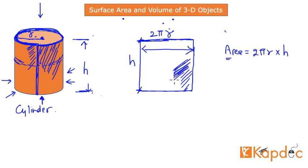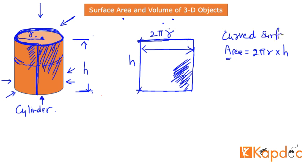What exactly do you call this surface area with reference to the cylinder? It is called the curved surface area of the cylinder, because that is the area of the curved surface around the cylinder. That is finding number one.